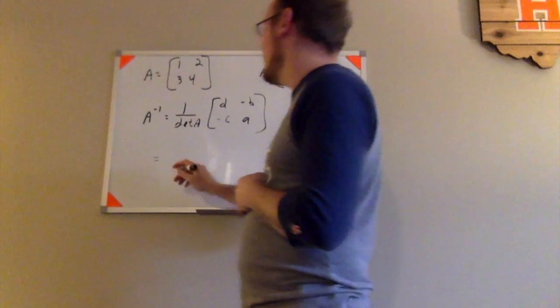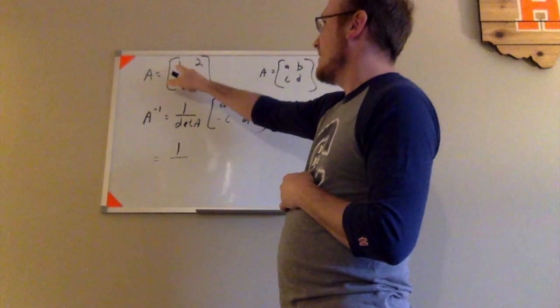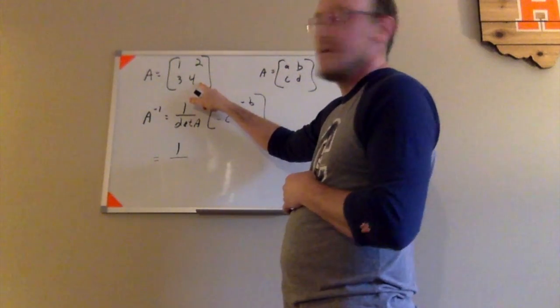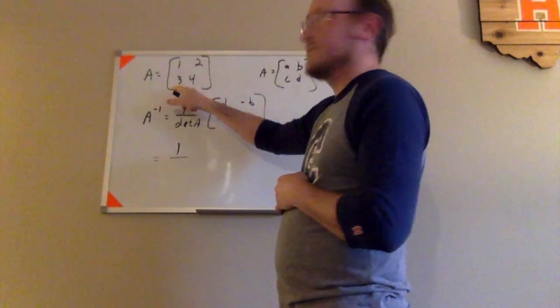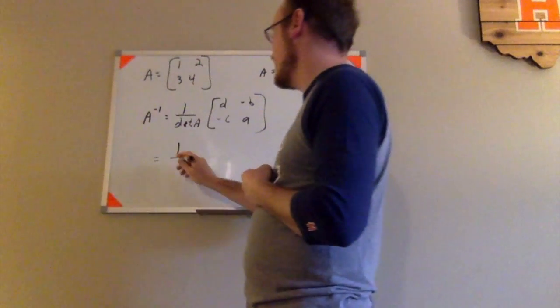The inverse of this matrix, 1 over the determinant of A. The determinant can be found by multiplying the entries on this diagonal, 1 times 4, which is 4, and then subtracting what you get when you multiply the other diagonal, 3 times 2 is 6. So I have 4 minus 6, which is negative 2.